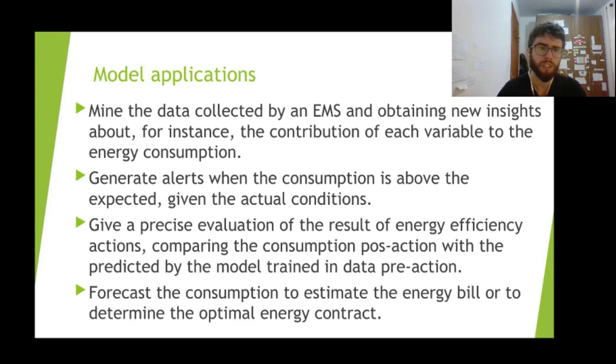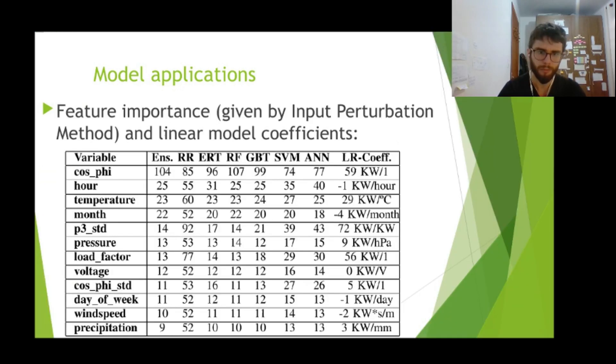One possibility is to analyze which input variables are more important to the energy consumption. We can do this using several techniques, for instance, the Input Perturbation Method, or to analyze the coefficients of the linear equation of one linear model, for instance, the ridge regression. That's a linear regression. And here we can see that the power factor is the most important variable to predict the energy bill, to predict the energy consumption.